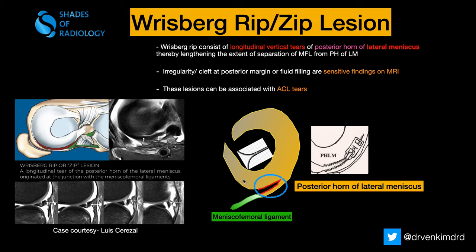In the diagrammatic representation, this is the posterior horn of the lateral meniscus, this is the anterior horn, and here is the body. The meniscofemoral ligament is shown here, and you can see the tear — this longitudinal vertical tear involves the meniscofemoral ligament attachment at the site of the posterior horn of the lateral meniscus. This is the classic example, which appears like a zip, as if you are unzipping something, giving that appearance in the axial sections.